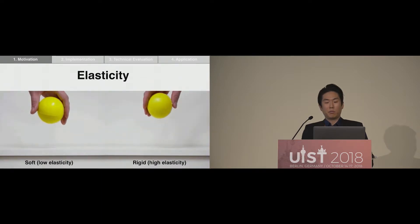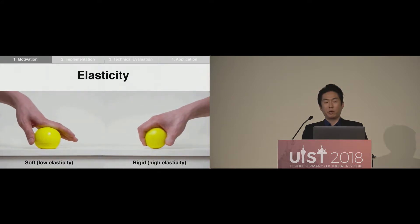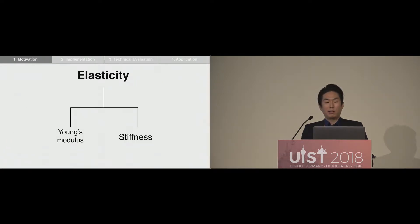Elasticity is a physical quantity that describes the relationship between the applied force and the degree to which an object deforms. For example, in the real world, when artists want to paint a soft line or make a soft sound, they use soft material such as a pearl brush and soft drum mallet. On the other hand, they use a paint knife or rigid drumstick when they want a sharper expression. The elasticity of an object can be described by two measures: Young's modulus and stiffness.